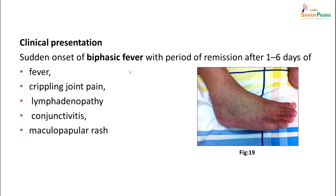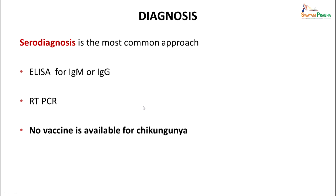Clinically, the patient will present with biphasic fever with a period of remission after one to six days, crippling joint pains, lymphadenopathy, conjunctivitis, and maculopapular rash. Diagnosis is usually done by serodiagnosis — ELISA for IgM or IgG antibodies. RT-PCR can also be done to detect viral nucleic acid, but no vaccine is available for chikungunya.